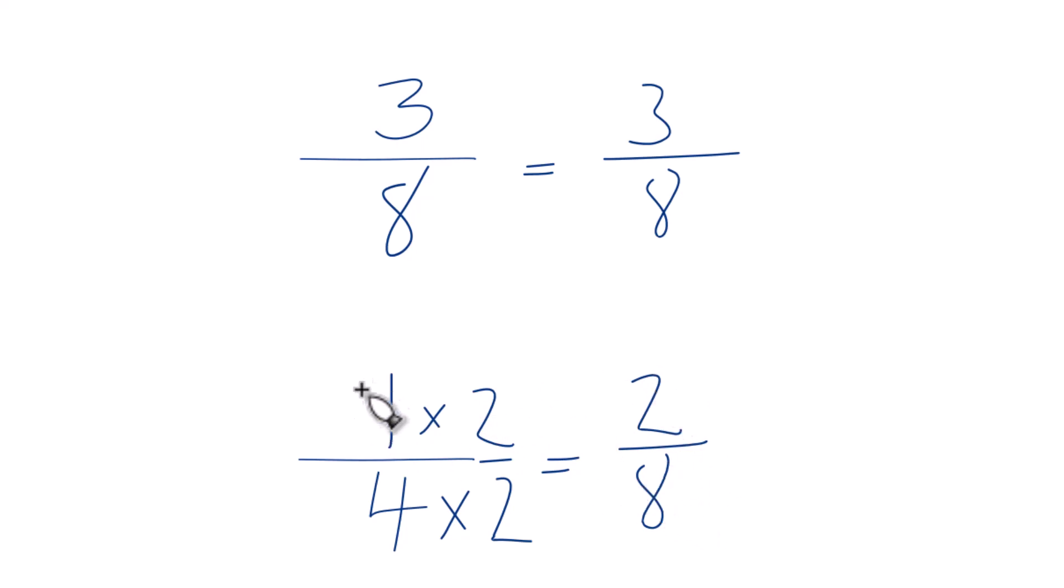And 2 eighths and 1 fourth, they're the same. Divide 1 by 4, 2 by 8, you get 0.25. But with the same denominators here, now we can compare those numerators.